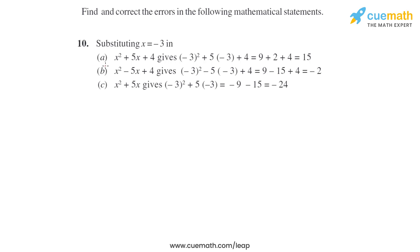Question 10 asks us to find and correct the errors. We are substituting x equals minus 3 in three parts. Part a: x squared plus 5x plus 4, their answer is 15. Part b: x squared minus 5x plus 4, their answer is minus 2. Part c: x squared plus 5x, their answer is minus 24. Let's check them one by one.